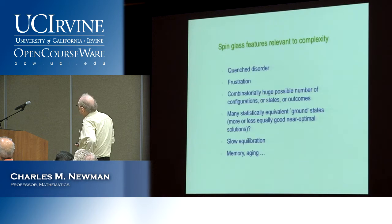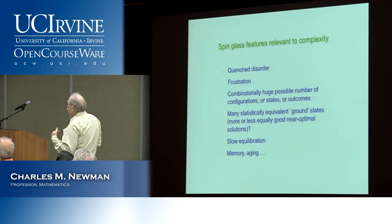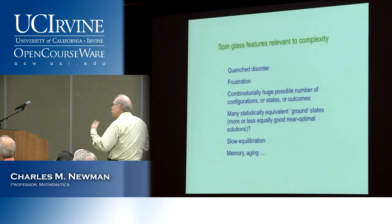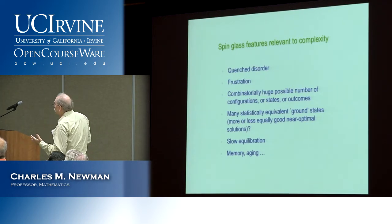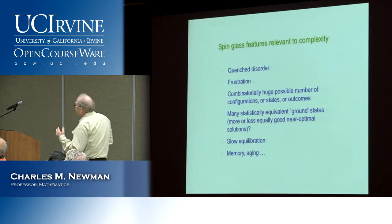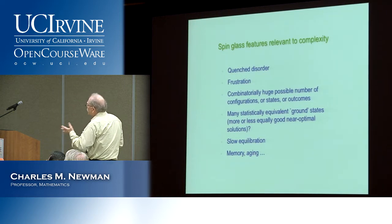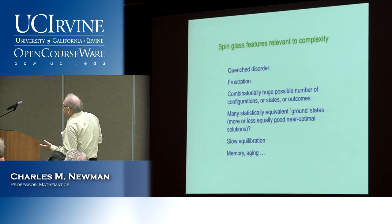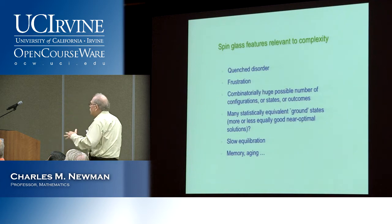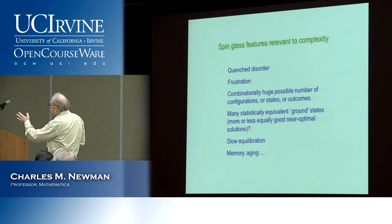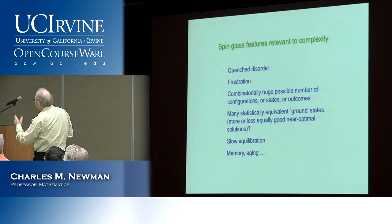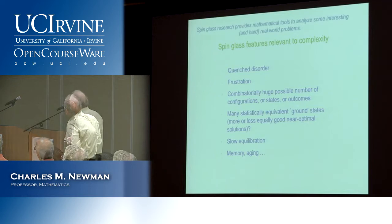The features of spin glass relevant for complexity include: quenched disorder, frustration, a very high number of possible configurations or states, and the fact that approximately near-optimal configurations are very different from each other, making it very hard to find the lowest energy configurations. There are also dynamical phenomena like slow equilibration, memory, and aging, which we won't get into in this talk.